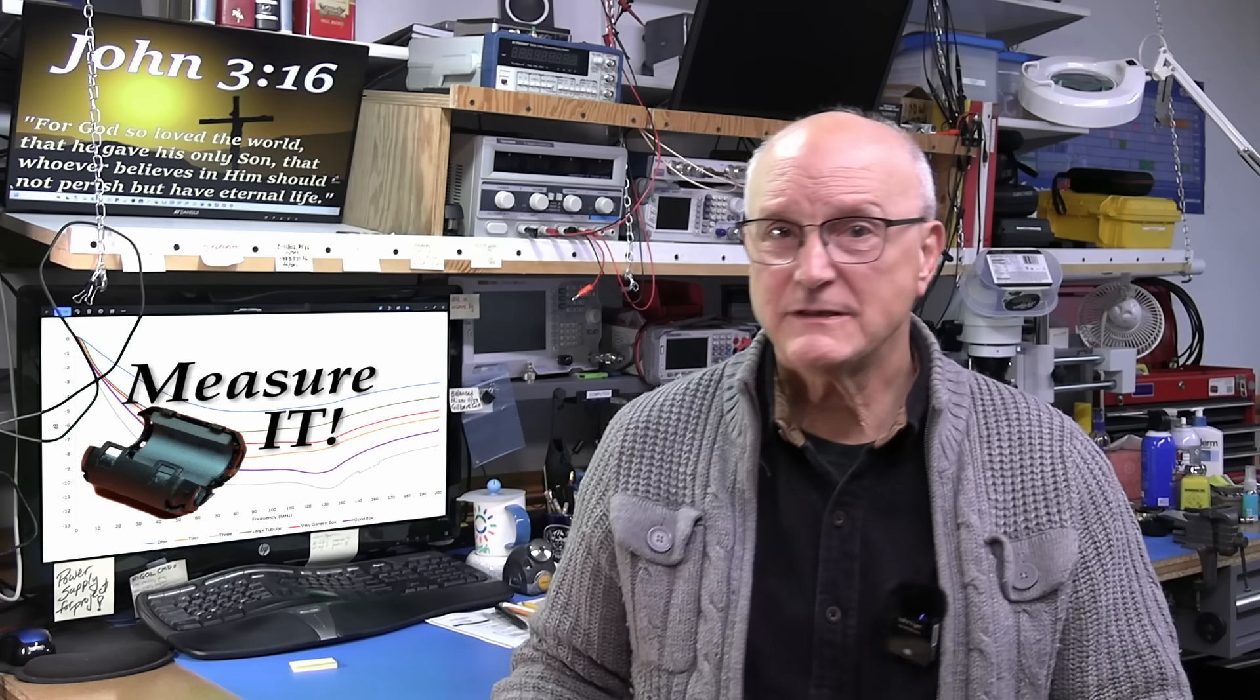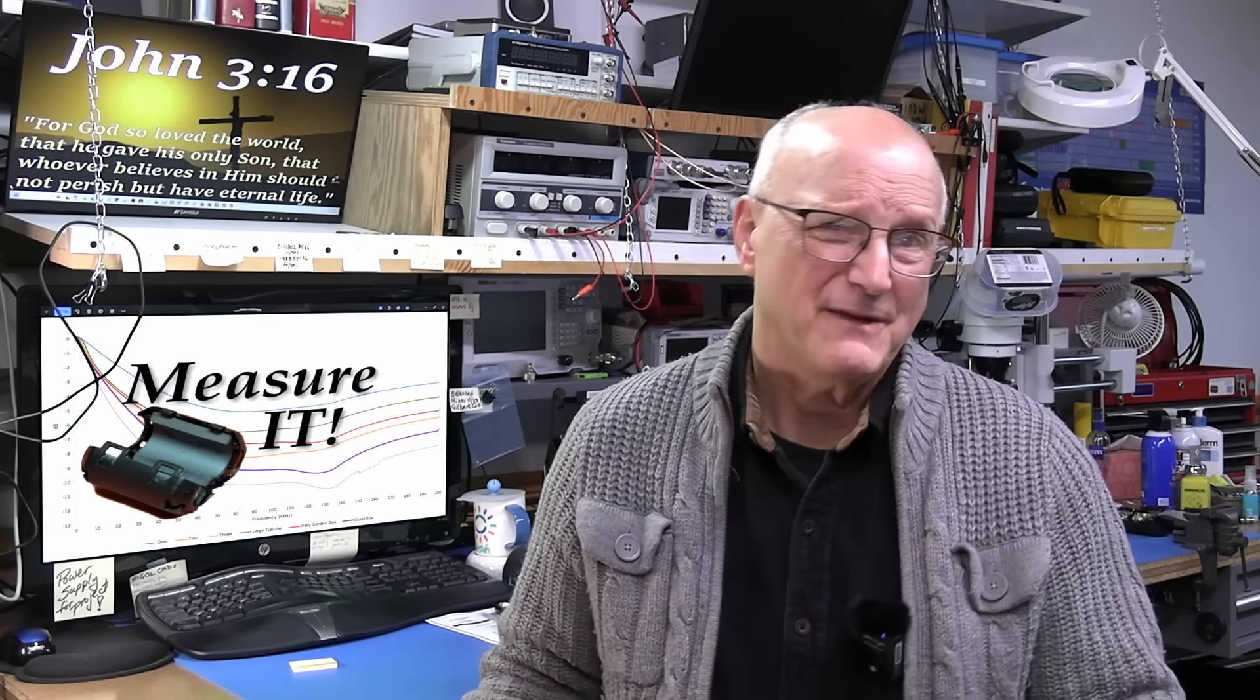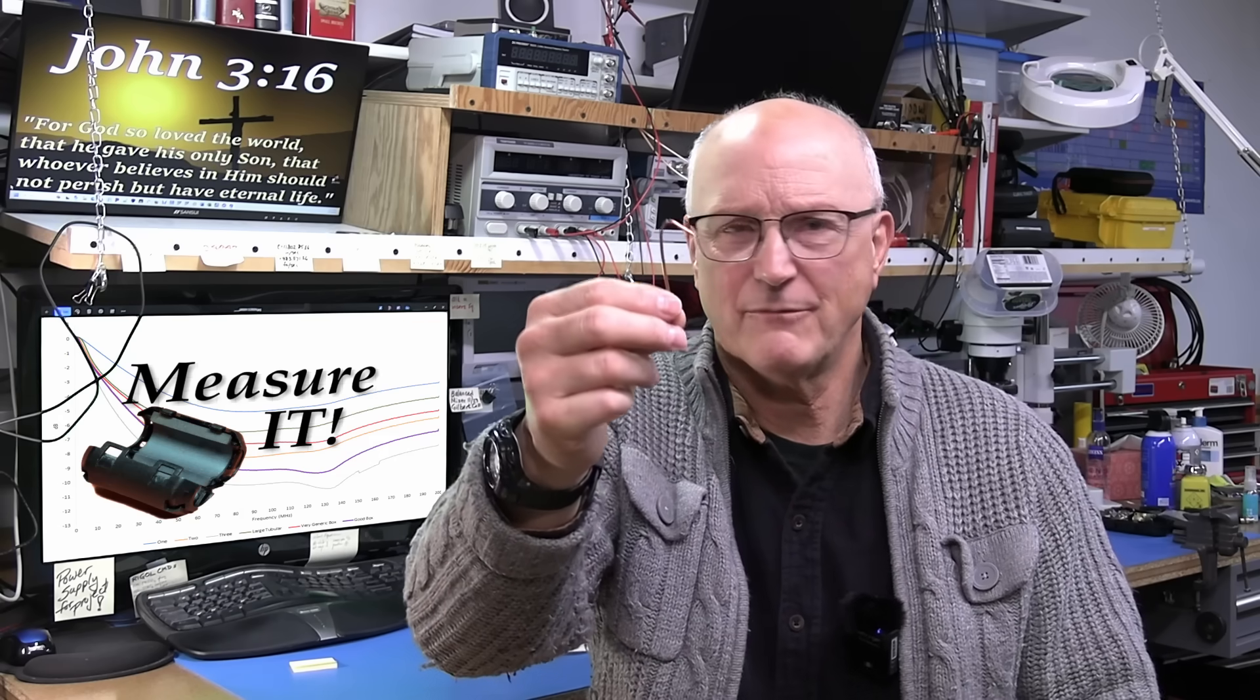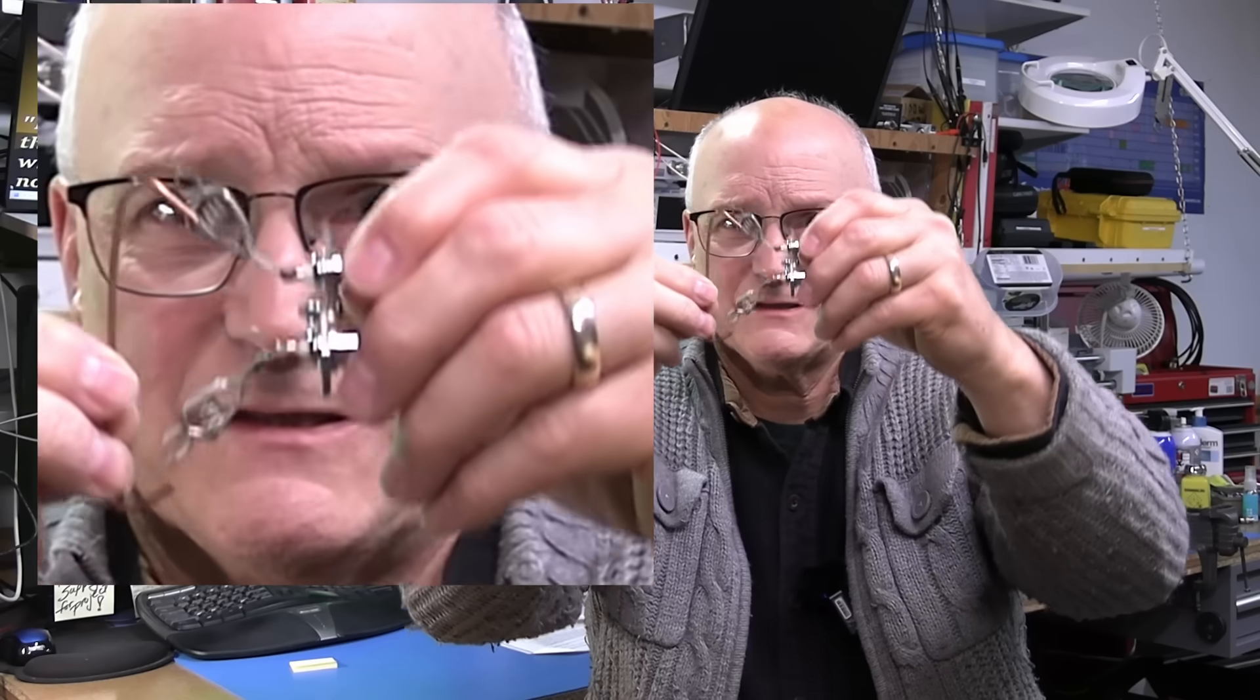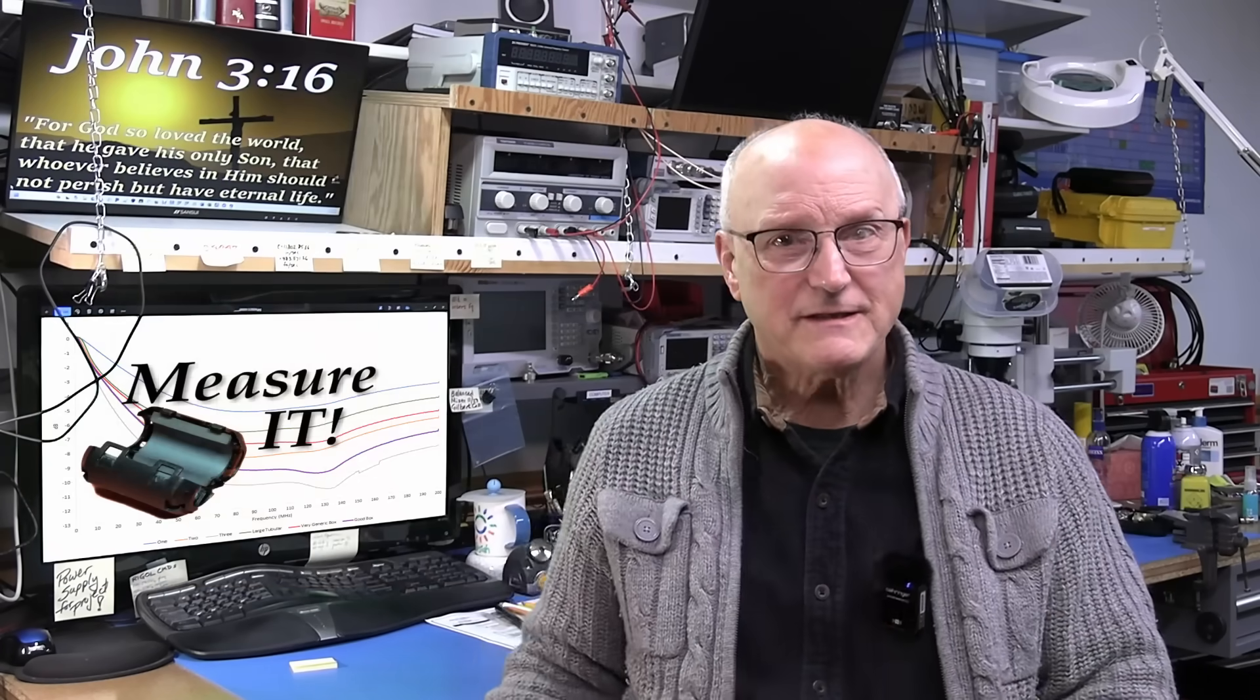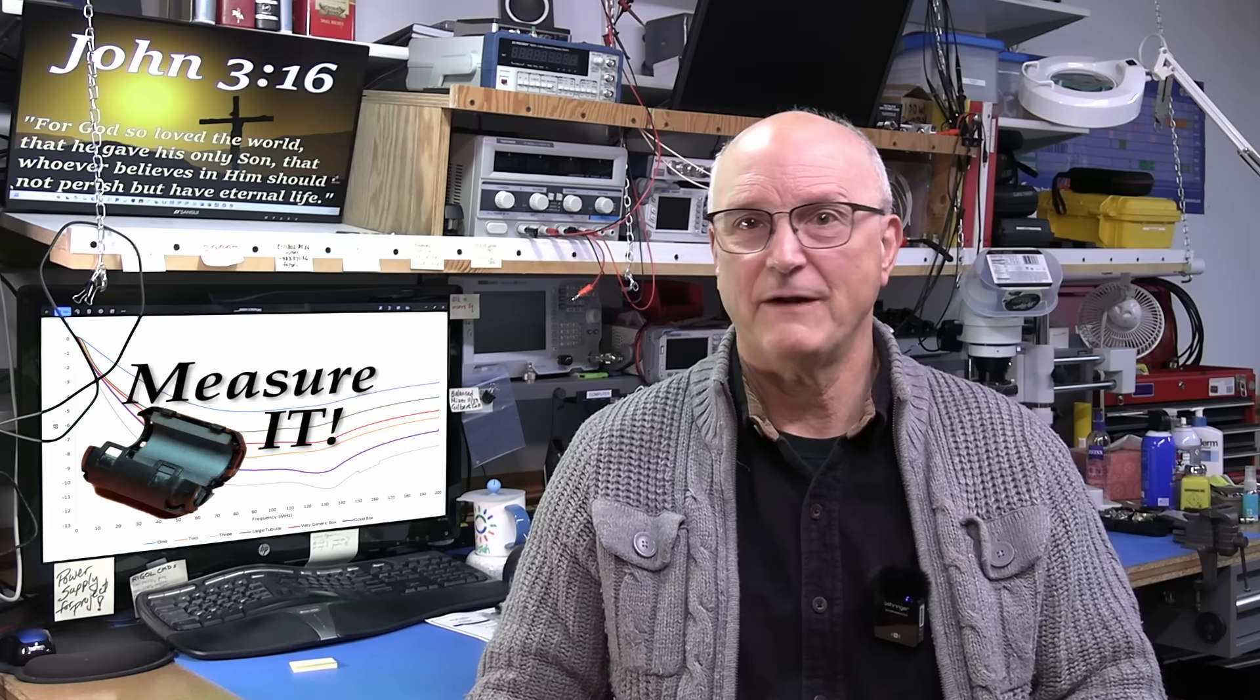The second part of the fixture is the wire loop. Well, it's nothing fancy, really. It's just a piece of bare number 12 solid wire bent so that it fits between the two clips, as you can see here. And this gives me something to clip my ferrite beads to.